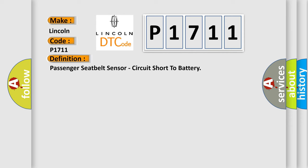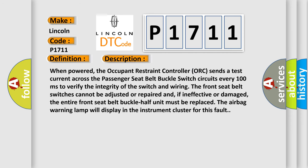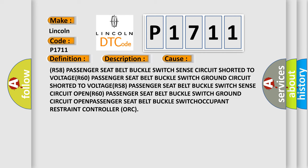When powered, the occupant restraint controller (ORC) sends a test current across the passenger seatbelt buckle switch circuits every 100 milliseconds to verify the integrity of the switch and wiring. The front seatbelt switches cannot be adjusted or repaired and, if ineffective or damaged, the entire front seatbelt buckle half unit must be replaced. The airbag warning lamp will display in the instrument cluster for this fault. This diagnostic error occurs most often in these cases: R58 passenger seatbelt buckle switch sense circuit shorted to voltage; R60 passenger seatbelt buckle switch ground circuit shorted to voltage; R58 passenger seatbelt buckle switch sense circuit open; R60 passenger seatbelt buckle switch ground circuit open; or a faulty passenger seatbelt buckle switch or occupant restraint controller (ORC).